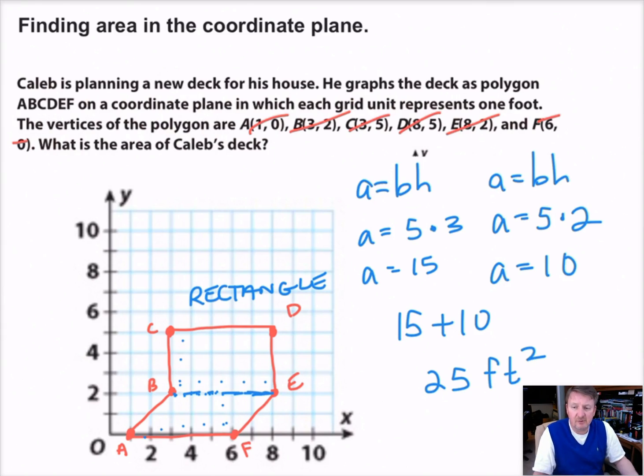So that's two examples of how you can use a coordinate plane to draw shapes and help find perimeter, help find area, or just kind of get an idea of what something looks like. Thank you.